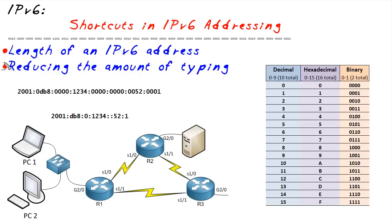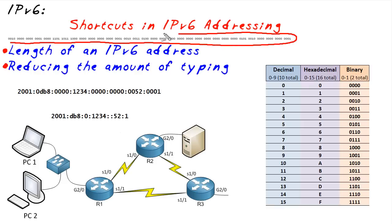Let's start off with an IPv6 address in its raw form, right here. It kind of looks like micro print on a signature line of a check, but that's 128 bits in binary — on or off — and that is an IPv6 address.